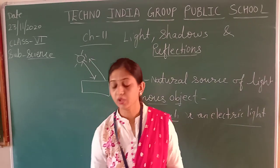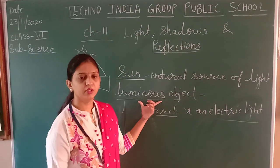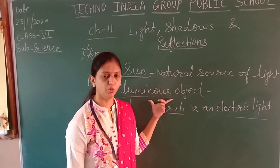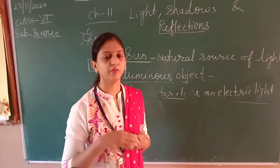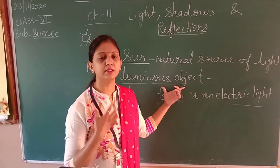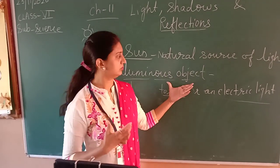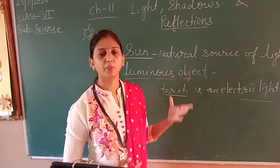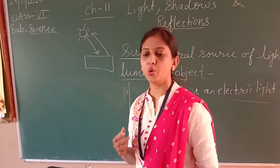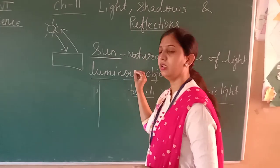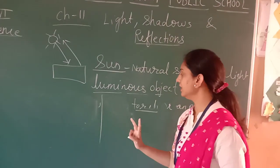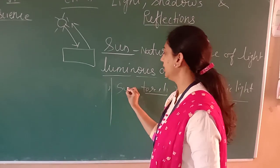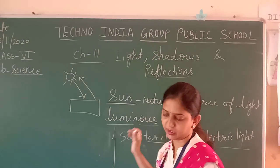What is a luminous object? Those objects which emit light of their own — they send out light. Luminous objects means the objects or sources which use their own light. These objects are called luminous objects. Examples are: torch, electric light, or the sun — all these are luminous objects.